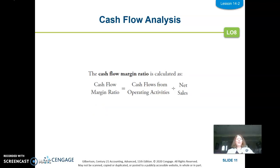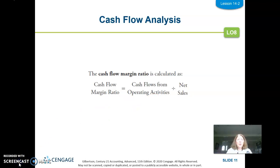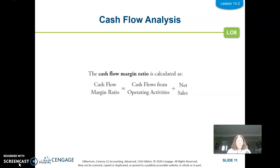The cash flow margin ratio is calculated as cash flows from operating activities (from the statement of cash flow) divided by net sales (from the income statement). Make sure you know where that information is coming from. Whatever number you come up with shows the amount of cash flow you're generating for every dollar of sales in a year — bigger is better, and positive is definitely better. Although net income is necessary for long-term success, a company still has to be able to pay its bills on time by generating cash on a timely basis.